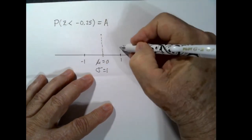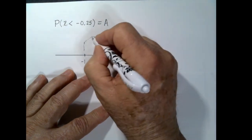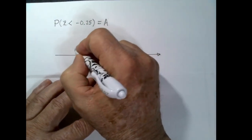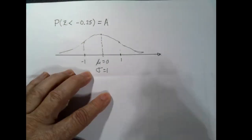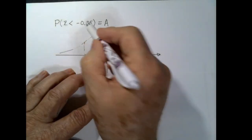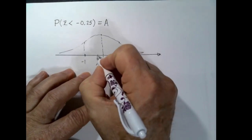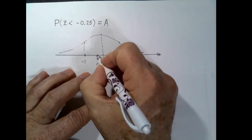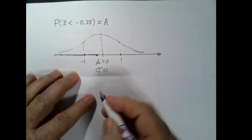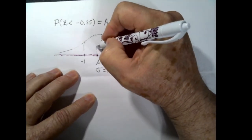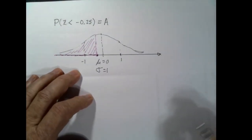The high point will be at the mean. At one standard deviation, the height will be about 60% of that high point. The curve is concave down through the middle and concave up out here. We're interested in z values where z is less than negative 0.25. So here's 0, here's minus 1, there's 0.5, and there's about where negative 0.25 is. The area we're looking for is this area to the left.